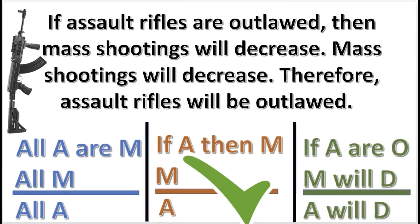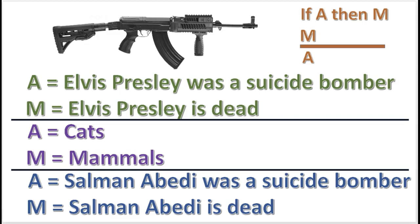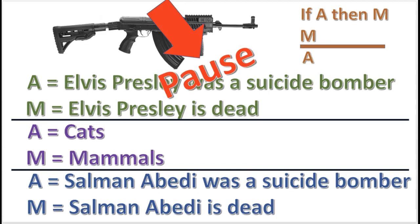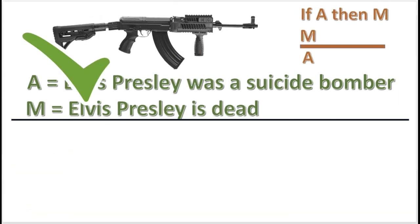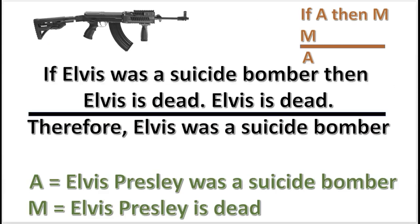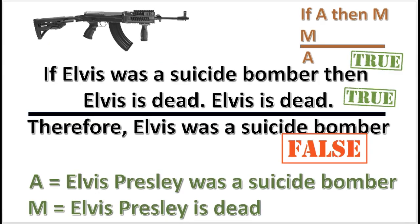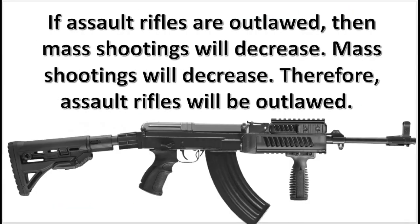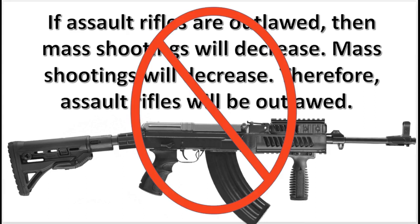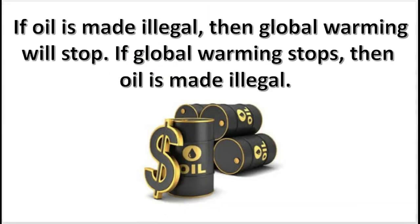That's correct. Notice A and M represent whole statements. Now, what set of substitutions proves that this form is invalid? When we substitute these letters for these terms, we get this argument, which gives you a true premise and a false conclusion, which means that the form is invalid. And if the form is invalid, then the original argument is invalid.